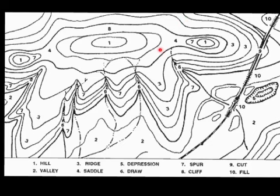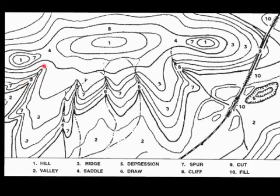Remember, the contour interval of any given map remains constant, though different maps will have different contour intervals. When contour lines cross a river or a stream, the bottom will look like a V-shape or U-shape quite often. And the V-shape or U-shape always points uphill.